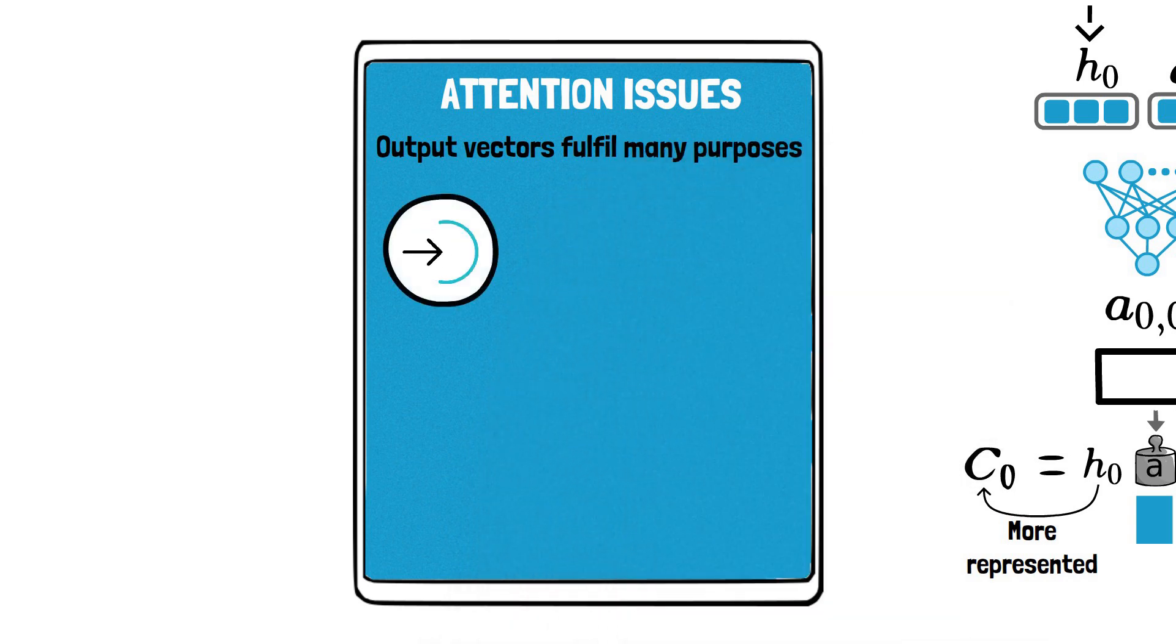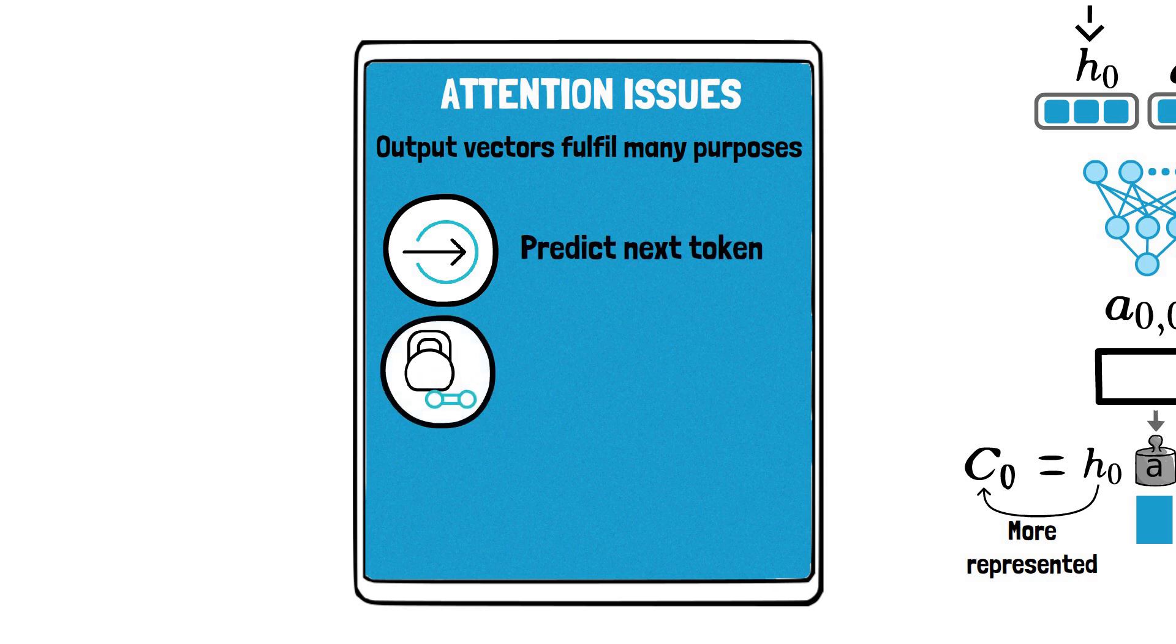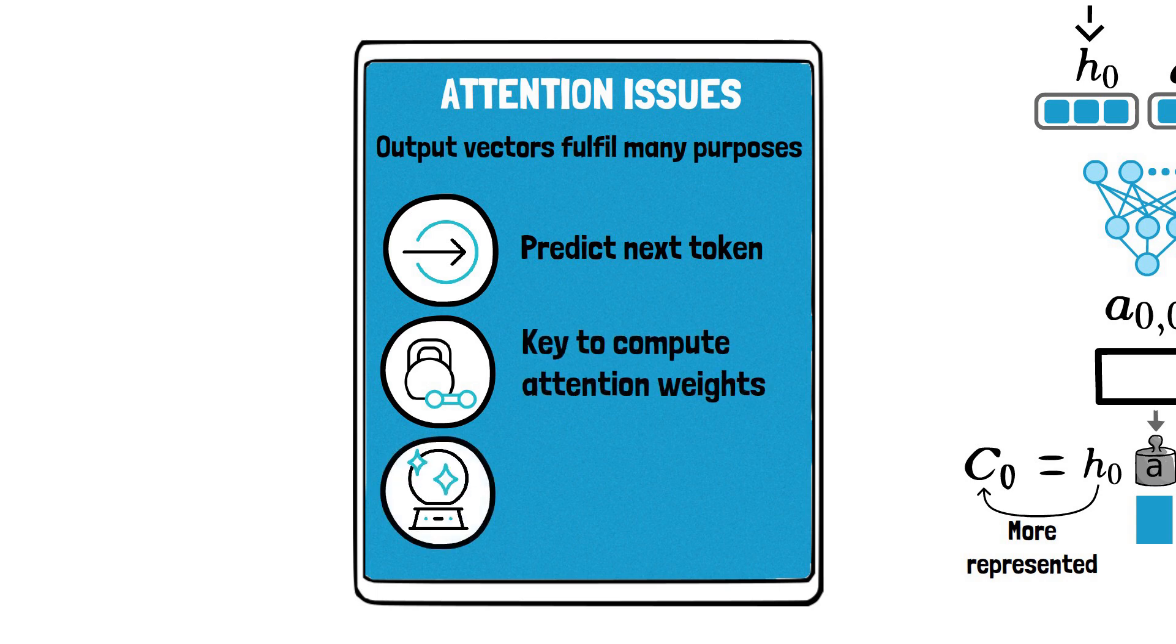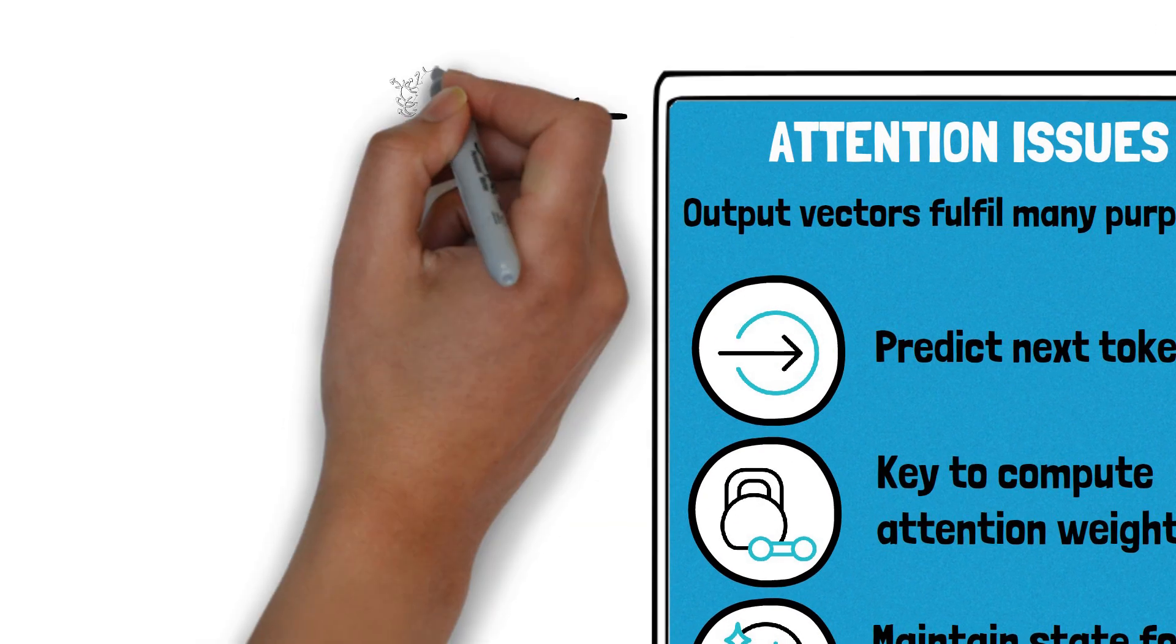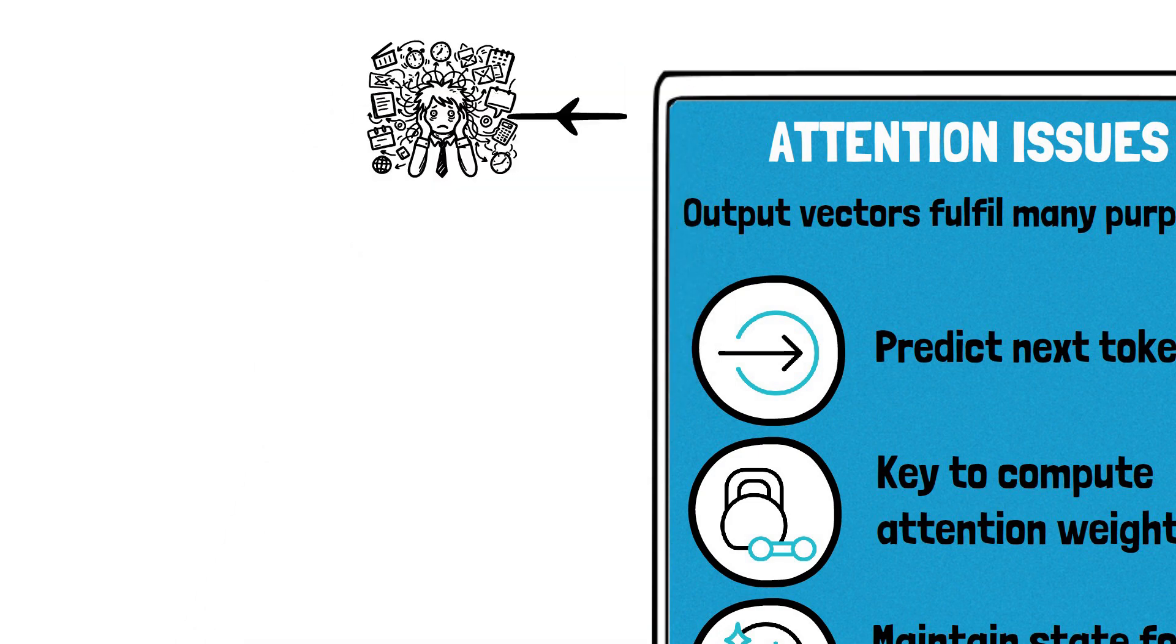For example, they need to encode a distribution for predicting the immediate next token, while serving as a key to compute the attention weights, as well as encoding relevant content to inform all future predictions. Such overloaded use of output representations actually makes the model difficult to train.